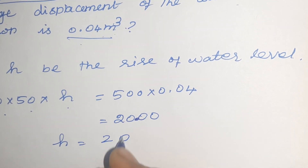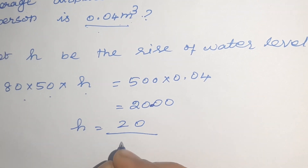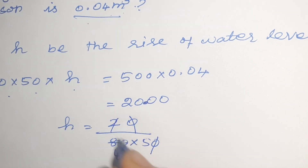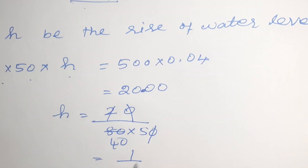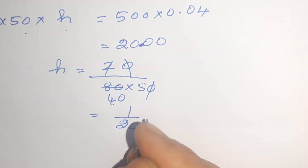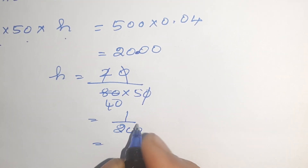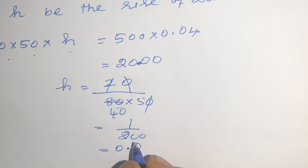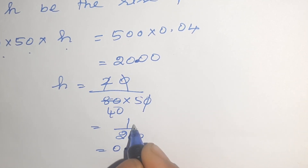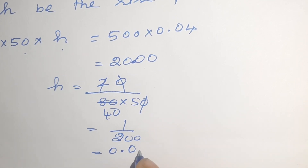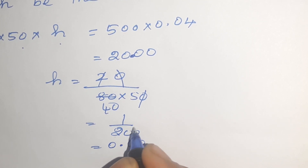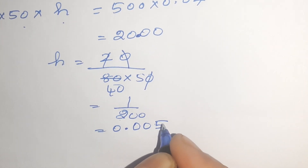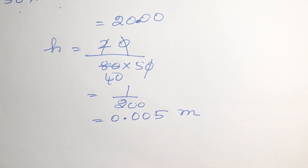So H equals 20 divided by 80 × 50. That gives 20 divided by 4000, which is 1 by 200, and that equals 0.05 meter.